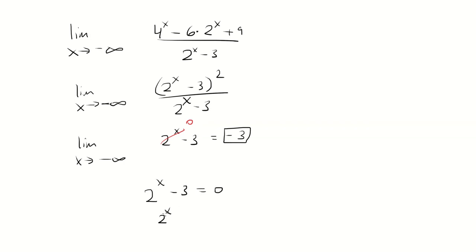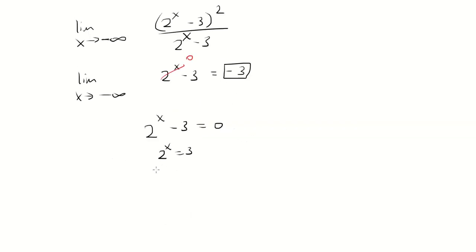To do that, we're going to add 3 to both sides, and then take the log of both sides. This is log of 2 to the x equals log 3. Bring the exponent down. We have x log 2 equals log 3.